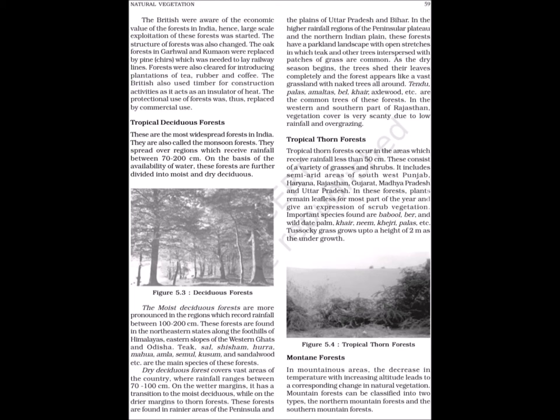Tropical Deciduous Forests are the most widespread forests in India. They are also called the monsoon forests. They spread over regions which receive rainfall between 70-200 cm. On the basis of the availability of water, these forests are further divided into moist and dry deciduous. The moist deciduous forests are more pronounced in regions which record rainfall between 100-200 cm. These forests are found in the northeastern states along the foothills of Himalayas, eastern slopes of the Western Ghats and Odisha.